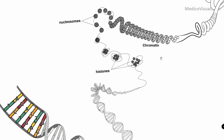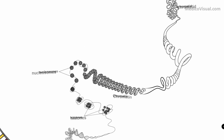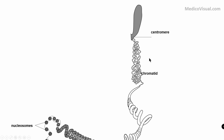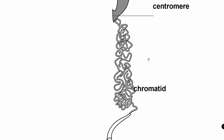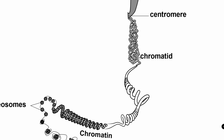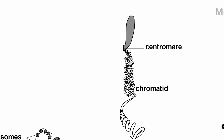This chromatin is further wound around itself to form a three-dimensional geometry called a chromatid. The chromatid consists of chromatin further coiled, held together by certain proteins called scaffolding proteins, forming this beautiful three-dimensional structure. This three-dimensional structure is called a chromatid, and the constricted part here is called the centromere.